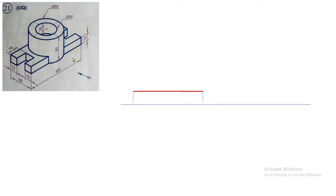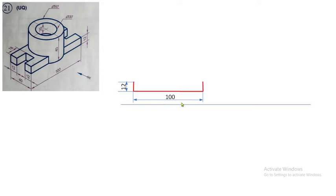So make it as 100mm. The height is 40mm, and the thickness is 12mm. We can see clearly here — the thickness is 12mm. So make it as the thickness.